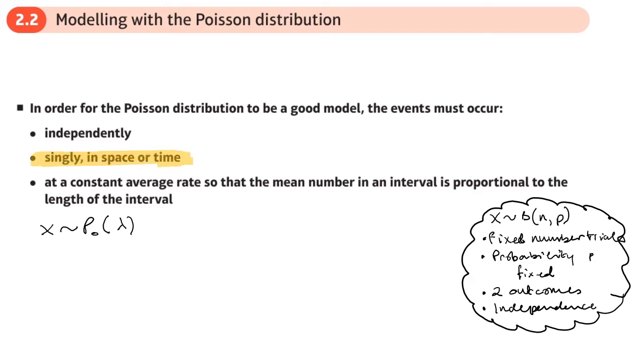They need to be independent just like binomial as well, which basically means if one of these events happens it's not affected by the event happening again, so it's independent.